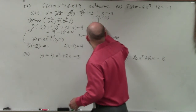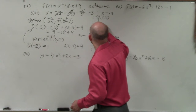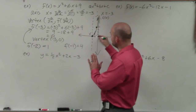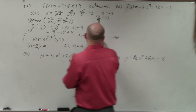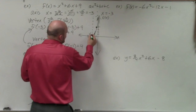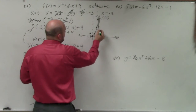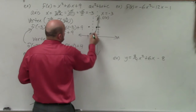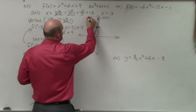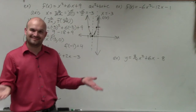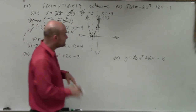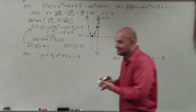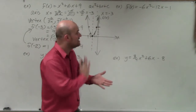So I go ahead and graph it. Since that's the axis of symmetry, I can easily just reflect these points over to graph the rest of my parabola. Now let's look at the second example, because this one has a negative a of negative 6.